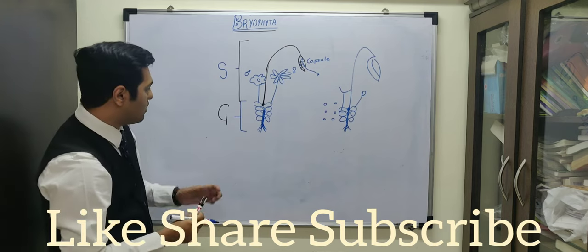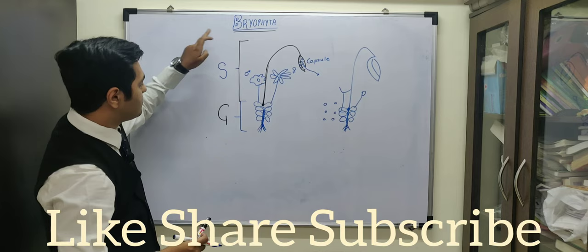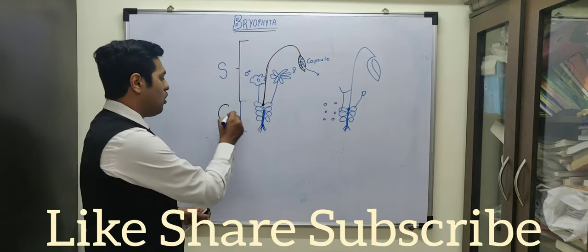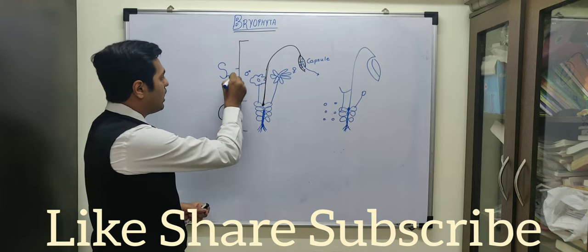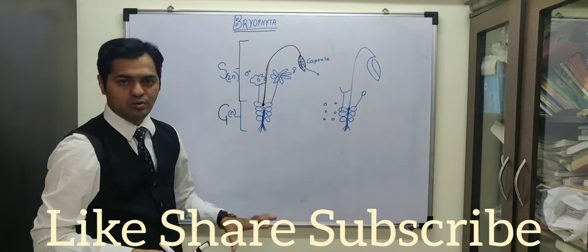The major dominant phase is the gametophytic generation and the sporophyte is dependent on the gametophyte. Gametophyte is always haploid, sporophyte is always diploid in nature. That is how the life cycle can be observed.